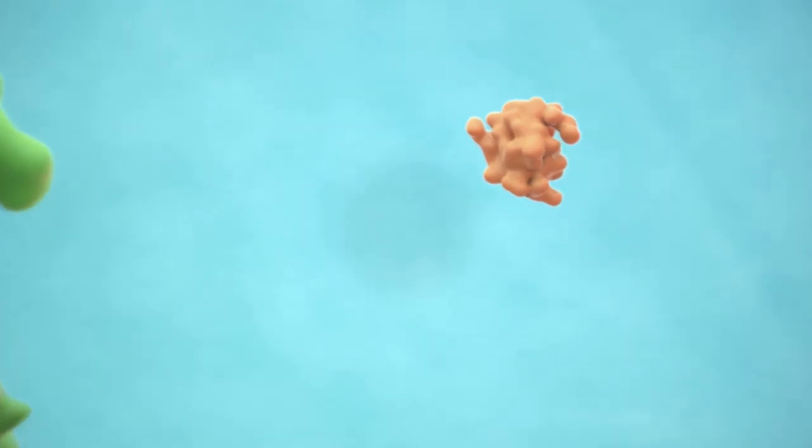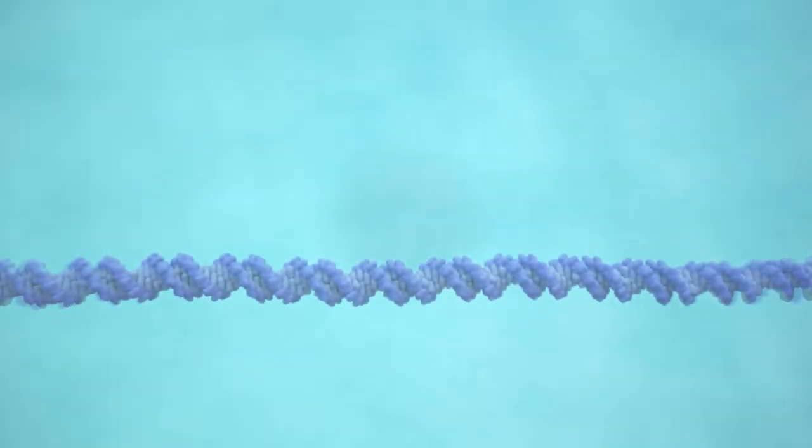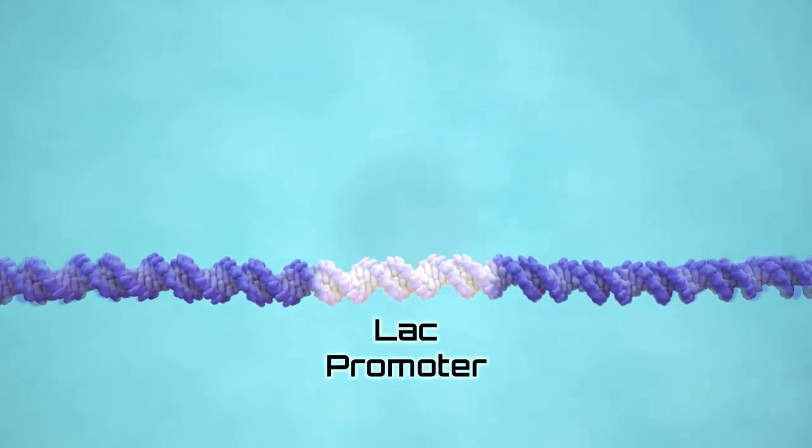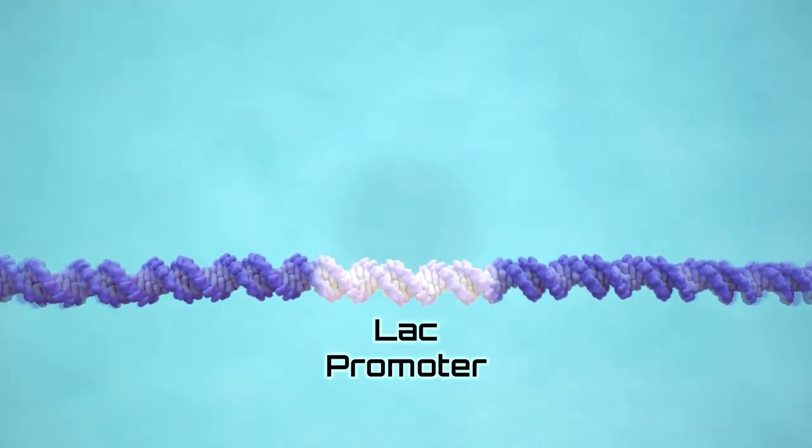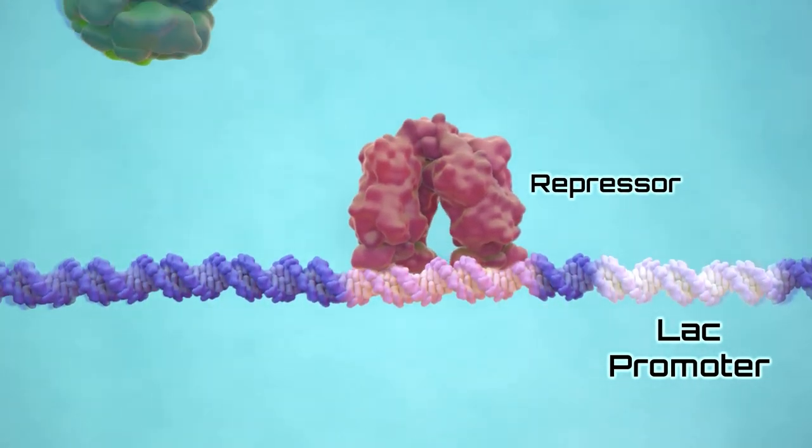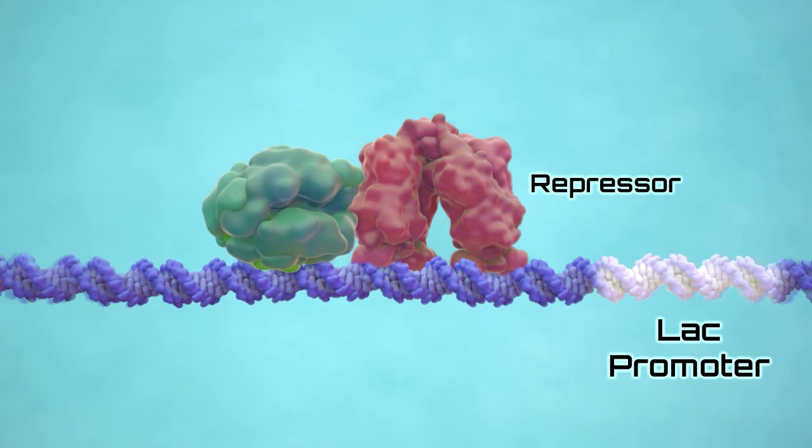The gene responsible for the T7 RNA polymerase is controlled by a region in the bacteria's DNA called the lac promoter. The lac promoter is controlled by an operator region just downstream that normally is silenced by the repressor protein. This prevents production of the protein encoded on the plasmid.